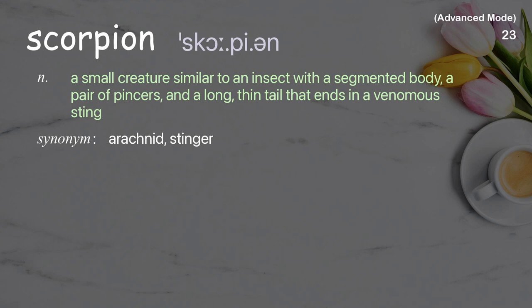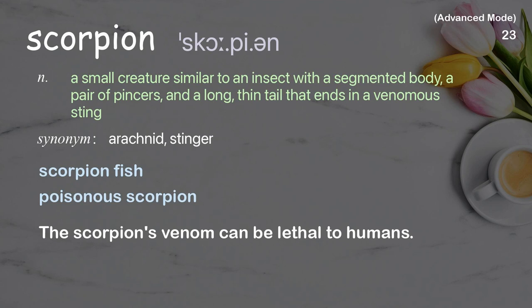Scorpion: A small creature similar to an insect with a segmented body, a pair of pincers, and a long, thin tail that ends in a venomous sting. The scorpion's venom can be lethal to humans.